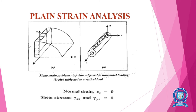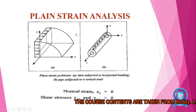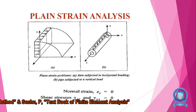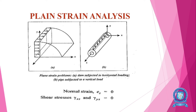The next topic is plane strain analysis. The figures show a dam subjected to horizontal loading and a pipe subjected to vertical load. Plane strain is defined as a state of strain in which the strain normal to the xy plane and shear strains are assumed to be zero. The normal strain e_z and shear strains gamma_xz and gamma_yz are equal to zero. This is called plane strain analysis.